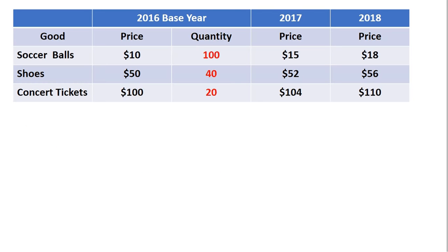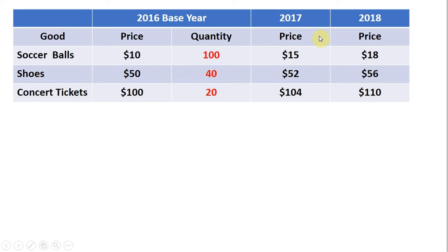Let's begin. We have a simple economy with three goods that consumers buy: soccer balls, shoes, and concert tickets. We have data for three years. In the base year — 2016 — we have the price of each item and the quantity that consumers purchased. In 2017 and 2018, we have the prices for those three items. We do not need quantity data for any year other than the base year — only the base year quantity data is required.